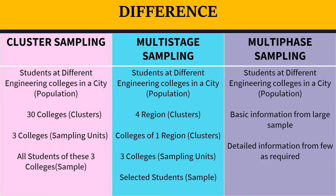In cluster sampling, my population is students at different engineering colleges in a city. Let's assume there are 30 colleges in the city — these 30 colleges will be my clusters. I will divide my whole population into clusters college-wise, giving 30 clusters. By using simple random sampling I will select few colleges as my sampling units — let's say three colleges. All the students of these three colleges will be my sample in cluster sampling.